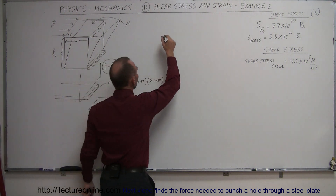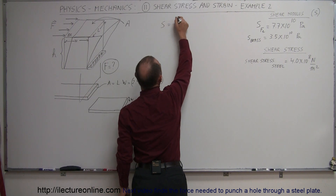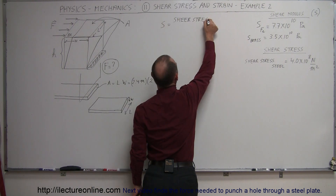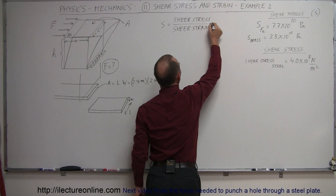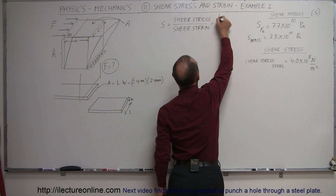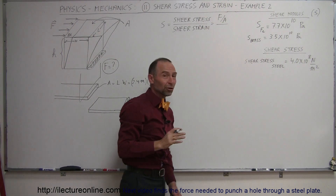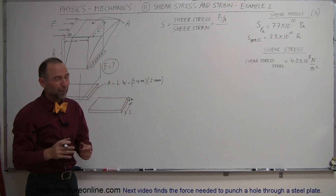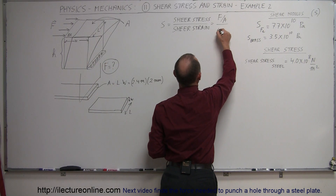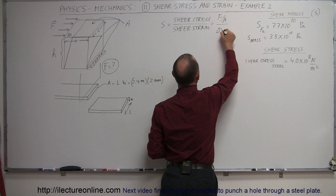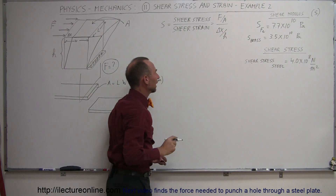The shear modulus S is defined as the shear stress divided by the shear strain. The equation is equal to the force divided by area — which is the definition of stress, force divided by area, same units as pressure — divided by the shear strain, which in this case is the deformation divided by the height of the material h.